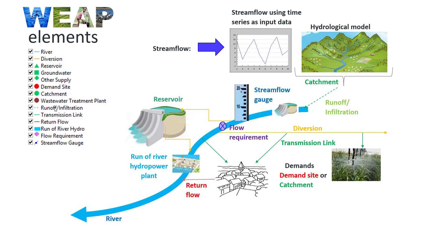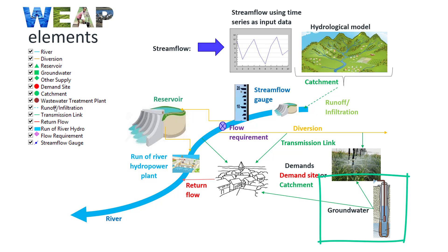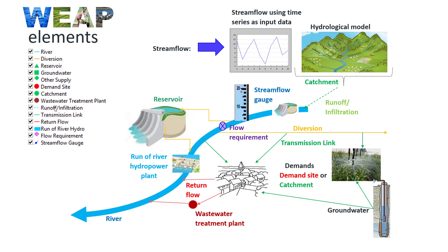We can also add groundwater elements. It is possible to add a transmission link element from the groundwater to the demand side. Finally, we can model water quality as well. We can include a wastewater treatment plant before the discharge point.